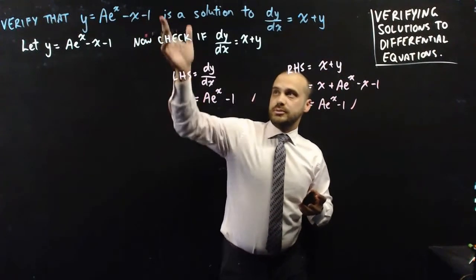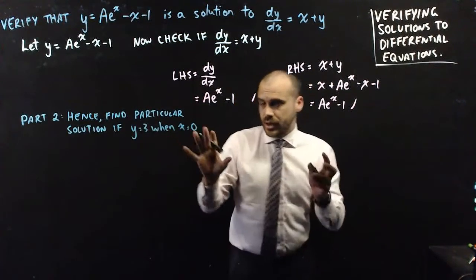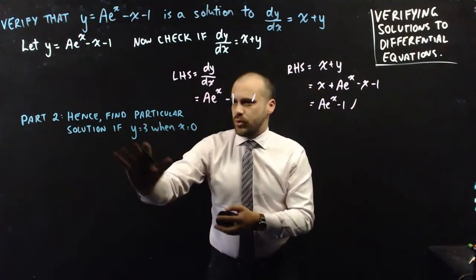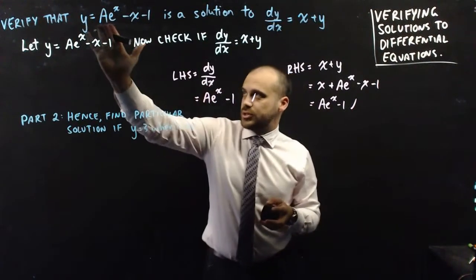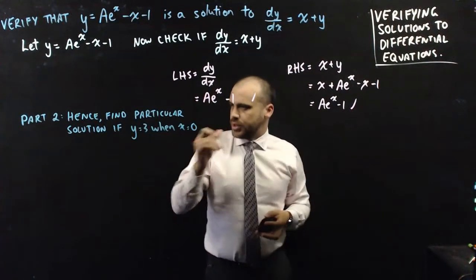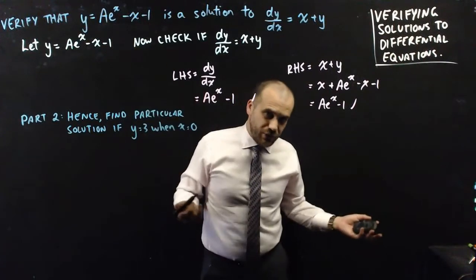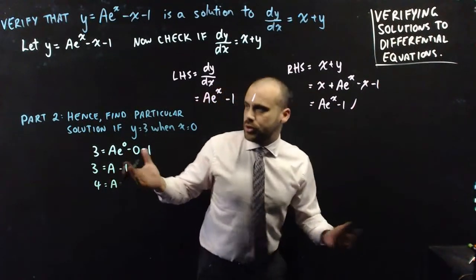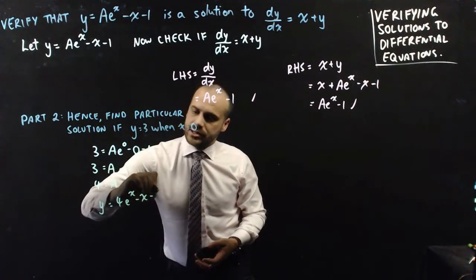I have verified that y equals ae to the x minus x minus 1 is a solution to dy/dx equals x plus y. Now we can couple this with a part 2. We can find the particular solution if y equals 3 when x equals 0, because this is just a general solution — the a value is a stand-in for any value, like a plus c in integration. Subbing 3 in for y and 0 in for x gives a equals 4.